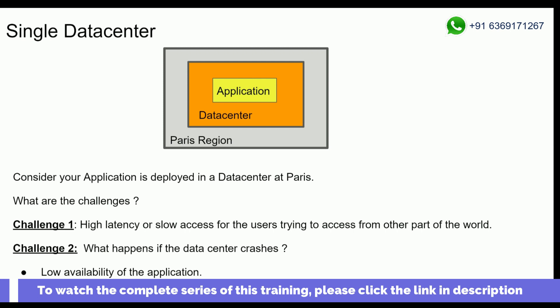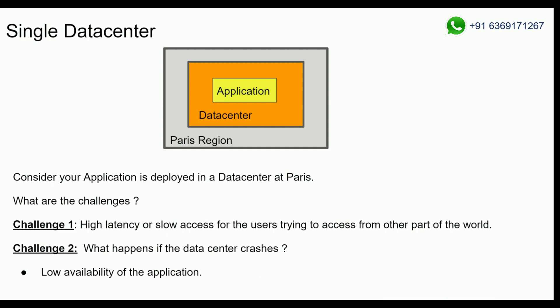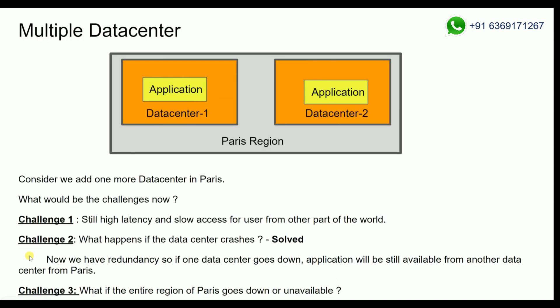Now we will see Challenge 2. For any reason, if my data center goes down, the application is down. So what should I do? I should have a redundancy setup. If this particular data center goes down, I should have another data center. In order to mitigate this challenge, I have to deploy my application in multiple data centers from the same region.